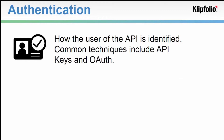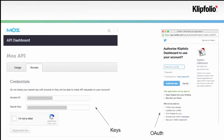First, authentication. This is how the API identifies you. The authentication process ensures that you're only getting access to data that you're authorized to access. Common techniques include OAuth and API keys. Often, an application will have a place in your account settings where you can find API keys — here's an example from Moz. By the way, these keys have different names: API key, access ID, secret key — but the names don't really matter. They're all used in the same way.